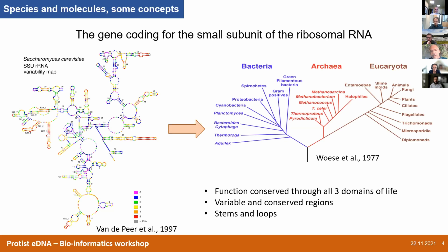By aligning the sequences that are very conserved, you can build — like Carl Woese did in 1977 — a tree of all living things, and that's how he discovered the existence of the archaea. And then if you align the more variable regions, that's how you differentiate between more closely related organisms.